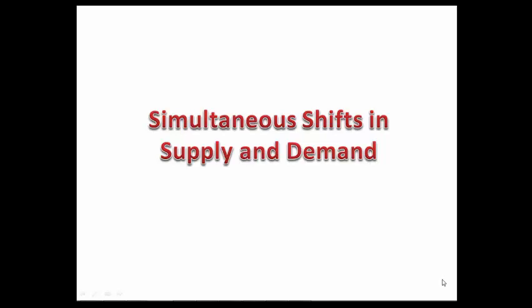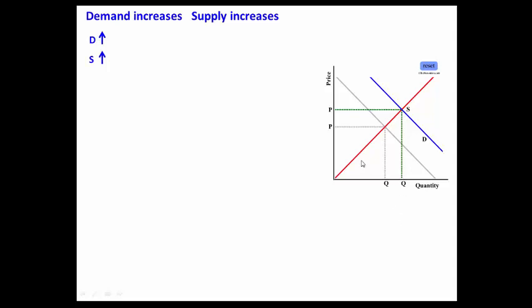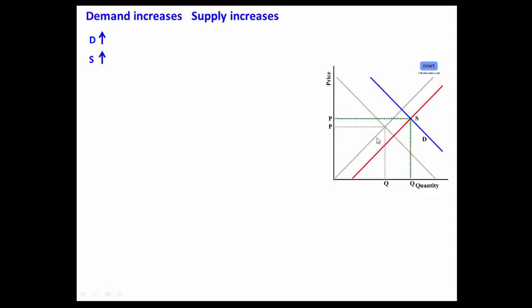Simultaneous shifts in supply and demand. Let's say that there is a demand increase and a supply increase. As demand increases, notice the price goes up and the quantity goes up. And at the same time, if supply increases, watch what happens to quantity. As supply increases, watch from this point here — quantity definitely increases as demand increases and supply increases.